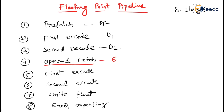Next is the first execute stage — we can write it as X1. In the first execute stage, the floating-point unit executes the first steps of the floating-point computation.